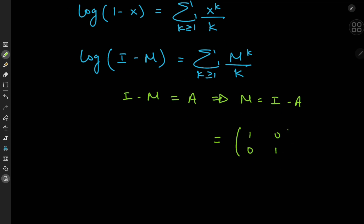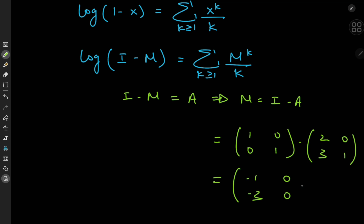The identity matrix is [[1,0],[0,1]], minus the matrix A which is given as [[2,3],[0,1]]. This sorts out to [[-1,-3],[0,0]]. That's our matrix M.